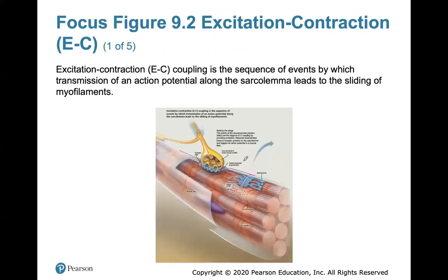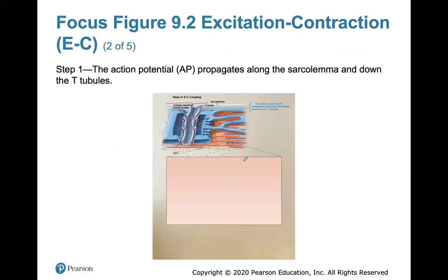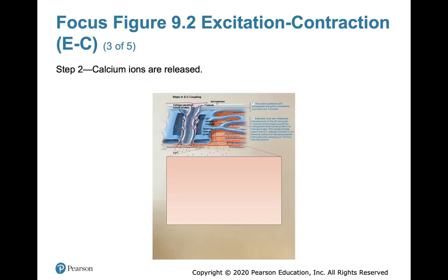Excitation-contraction coupling is a sequence of events by which the transmission of an action potential along the sarcolemma of a muscle fiber leads to the sliding of the myofilaments. The first step is the action potential being propagated along the sarcolemma and eventually down into the T-tubules. The second step is calcium ions being released from the terminal cisternae of the sarcoplasmic reticulum.